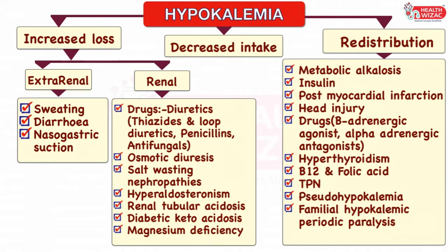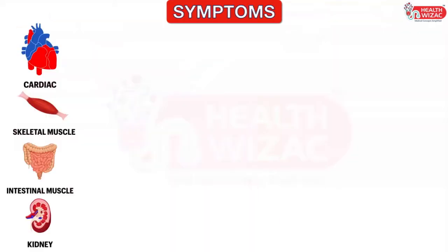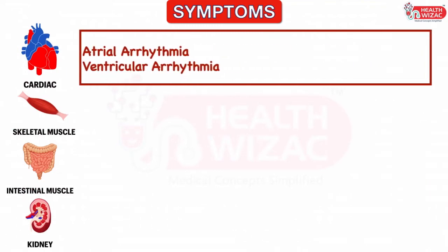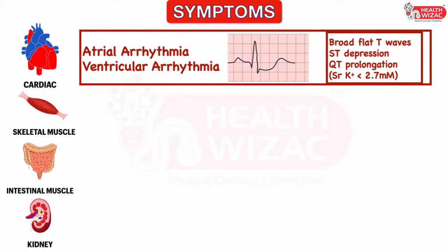Hypokalemia predominantly affects cardiac, skeletal and intestinal muscles and kidneys. Cardiac symptoms include atrial and ventricular arrhythmias. ECG changes include broad flat T waves with ST depression and QT prolongation, which are more marked when serum potassium is less than 2.7 millimoles per litre.